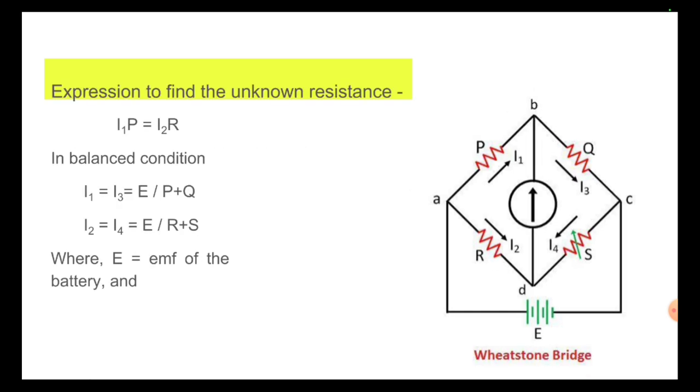Then coming to the expression to find the unknown resistance. The voltage drop across the resistance P is equal to the voltage drop across the resistance R. That is, I1P is equal to I2R.